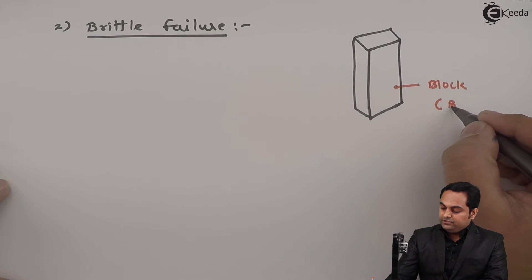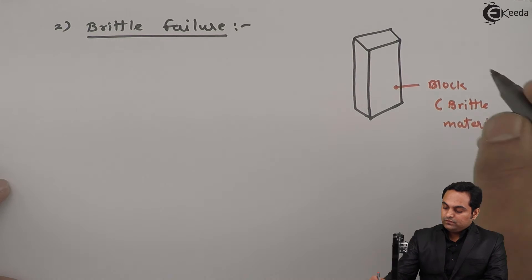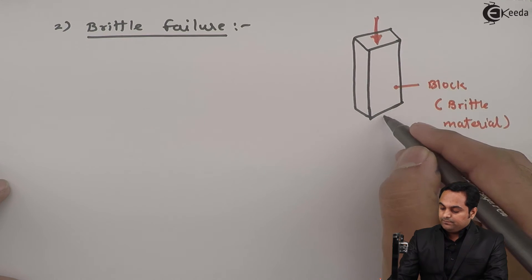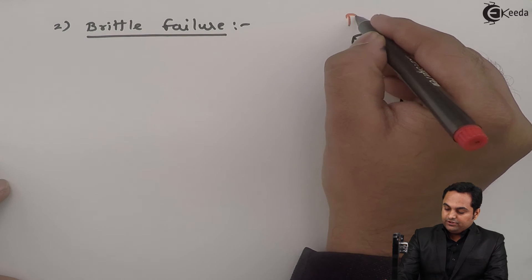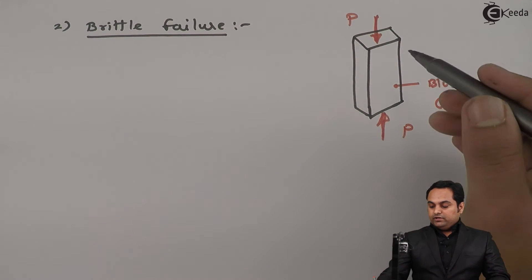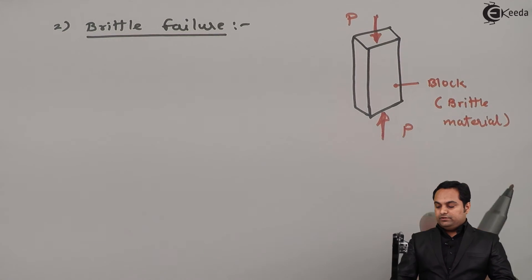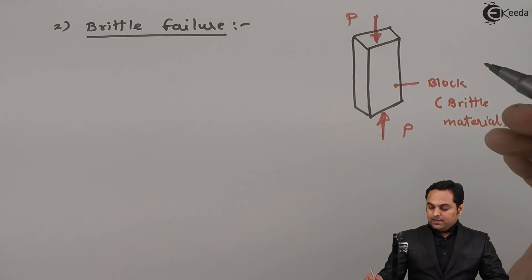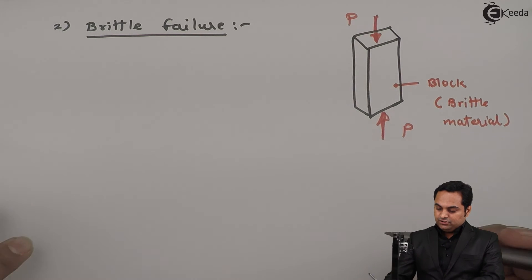On this brittle material block, load is applied and the nature of the load is compressive. If we are applying compressive load, then brittle materials are stronger in compression. But if I change the nature of loading...